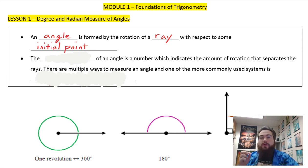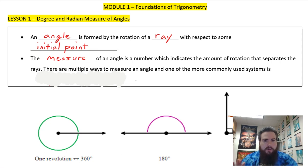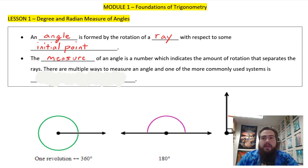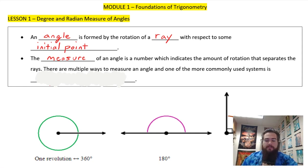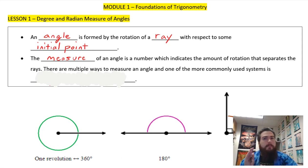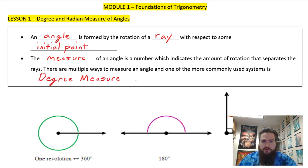In order to measure the space that something is rotating by, there are a few different ways to measure an angle. In general, the measure of an angle is a number which indicates the amount of rotation that separates the rays. There are multiple ways to measure an angle, and one of the most common ones is degree measure.